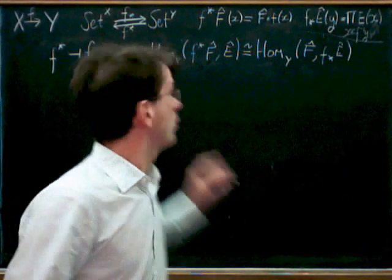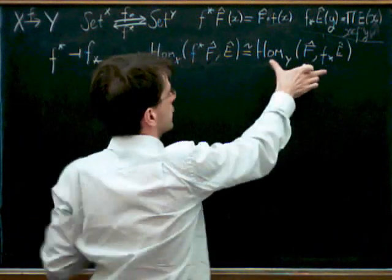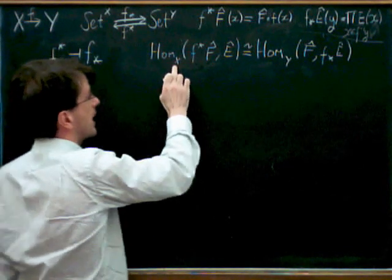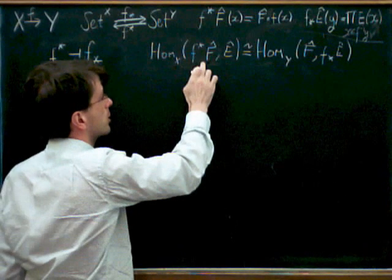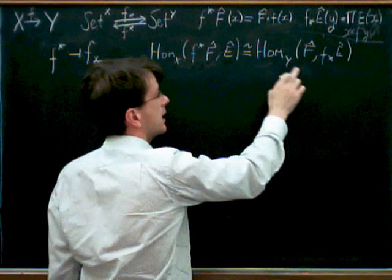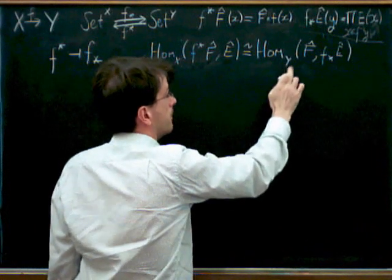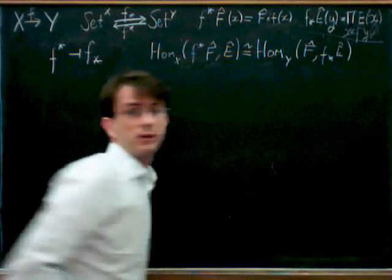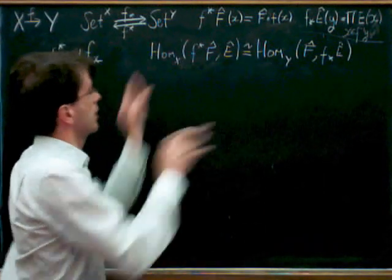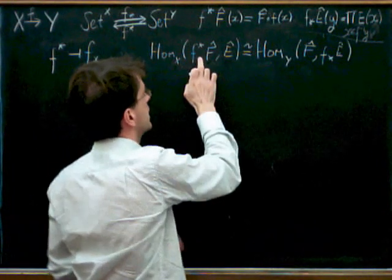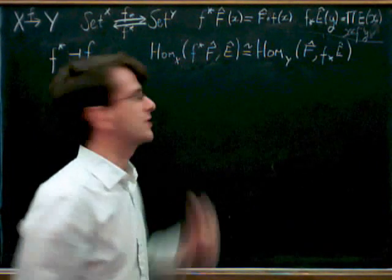Okay, so last time what I did was establish this isomorphism between these two homosets, between the bundle morphisms over X between the pullback of a bundle on Y to a bundle on X, and the bundle morphisms over Y between that bundle over Y and the push forward of the bundle on X. That was just a calculational thing to set up this adjunction between F upper star and F lower star.